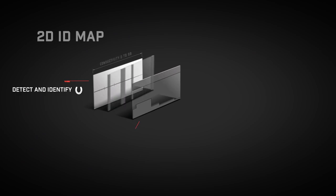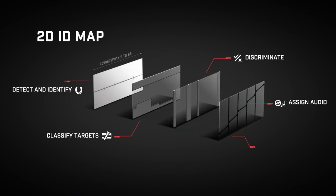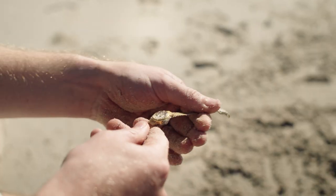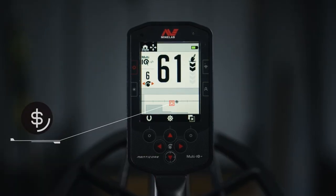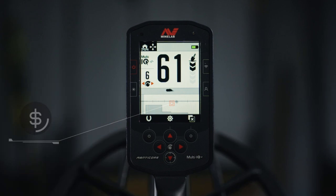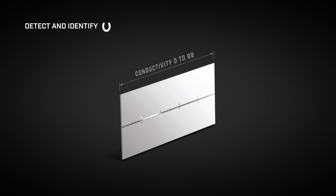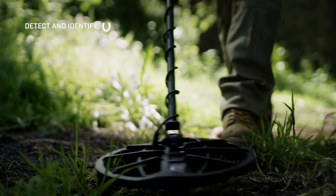Manticore's two-dimensional ID map with audio your way is the ultimate dashboard that gives you the confidence to dig in or move on. You'll see and hear in an instant target response — size and shape — and trash and treasure clearly zoned. The ID map shows target IDs running across the screen as you swing; the target trace tracks the target.